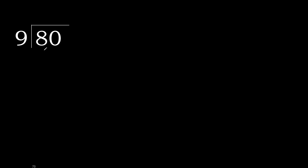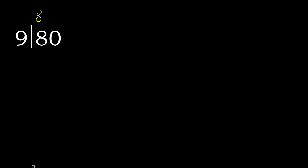80 divided by 9. 8 is less, therefore next. 80 is not less, therefore with 80 and 9, multiply by which number is nearest to 80 but not greater. 9 multiply by 9 is greater, so multiply by 8. 72 is not greater.